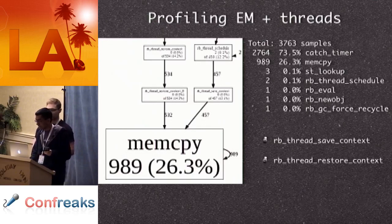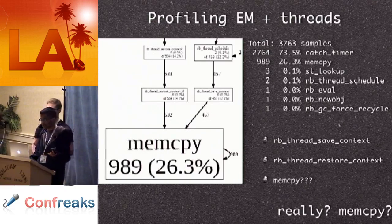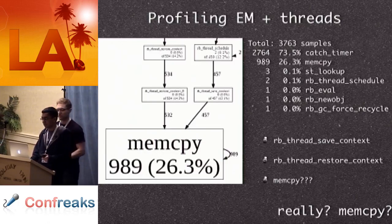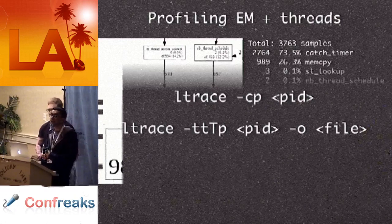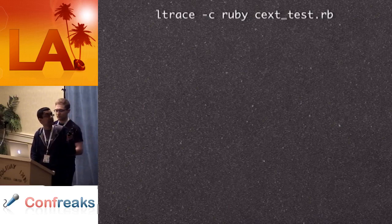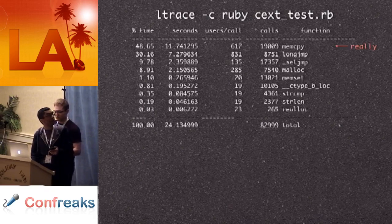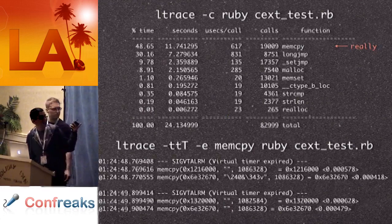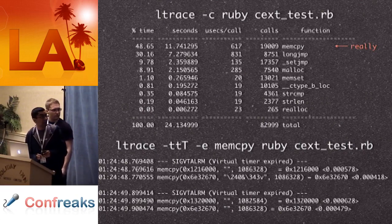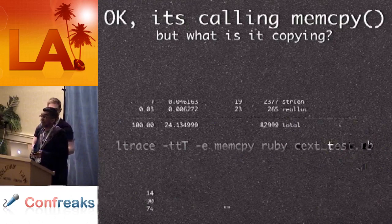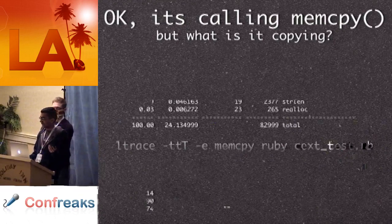I ran this on the EventMachine threading problem. There were some candidates that made sense — definitely thread_save_context and thread_restore_context — but it turned out they were all calling memcpy. This was really surprising; I didn't believe it at first. So I decided to try another tool to confirm: Ltrace. It's very similar to strace but it traces library calls instead of system calls. The syntax is almost exactly the same. You can run it with -c for a summary — and sure enough, memcpy was the first one on there taking a large amount of time. Running it in detailed mode showed that right after SIGVT alarm, there were two calls to memcpy happening, and all of those calls were adding up.